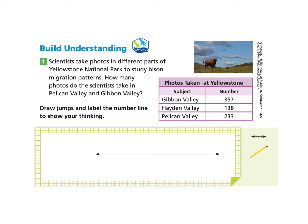You can pause anytime as needed. Scientists take photos in different parts of Yellowstone National Park to study bison migration patterns. How many photos do the scientists take in Pelican Valley and Gibbon Valley? Draw jumps and label the number line to show your thinking. We have a table showing photos taken at Yellowstone with the subject and number of photos. Gibbon Valley has 357 photos and Pelican Valley has 233 photos.